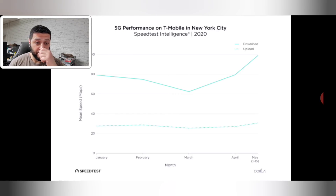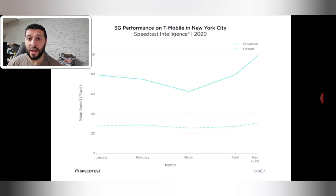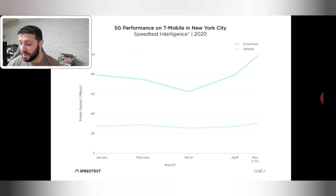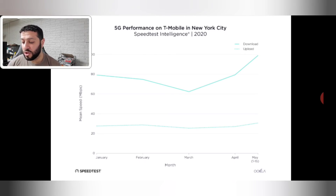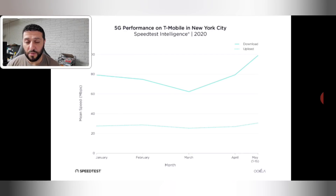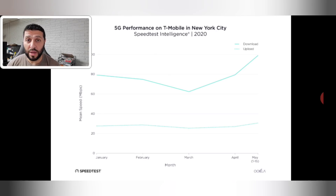T-Mobile is still building out their 600 MHz low band — the bottom layer of the cake — and the second layer is the 2.5 GHz mid band from the Sprint merger. The driving force of these network upgrades in New York City is the deployment of 2.5 GHz spectrum from that merger. The advantage here is that it not only works outdoors but still works indoors, helping basically everybody in all situations.